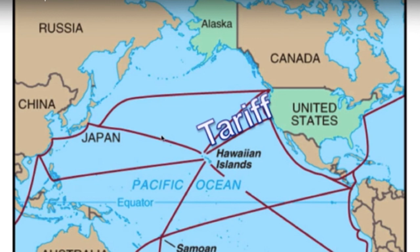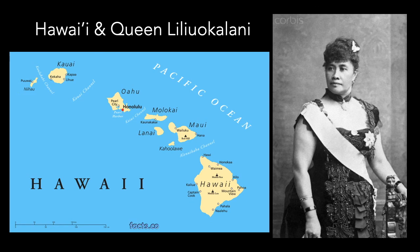American businessmen in Hawaii were alarmed — they would lose their businesses if they couldn't sell goods in the United States. The businessmen got together and considered their options: give up and lose everything, or fight back. One way to fight was to overthrow the Hawaiian government, have a revolution, proclaim Hawaii American, and petition Washington D.C. to become a territory and eventually a state. As an American territory, the tariff would no longer apply to them. These businessmen decided to go through with it.